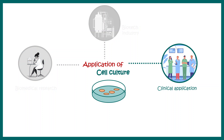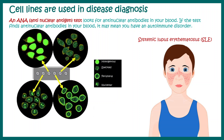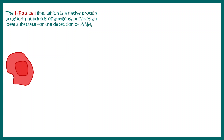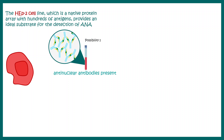Let's begin by looking at the application of cell culture in clinical settings. Cell lines are used to diagnose diseases — one such example is the diagnosis of autoimmune diseases. One test performed is the anti-nuclear antigen test, or ANA test, which looks for anti-nuclear antibodies present in the blood. Patients suffering from systemic lupus erythematosus will show a positive ANA test. In this test, HEp-2 cell lines are used.